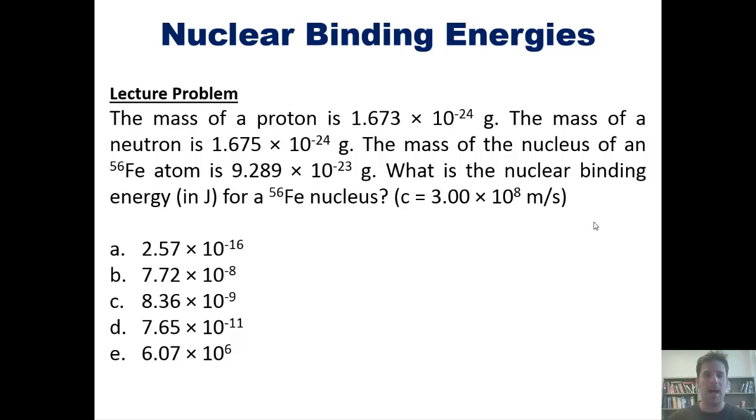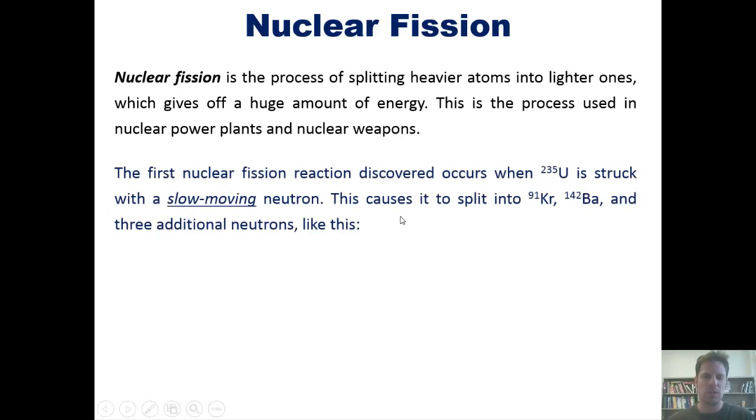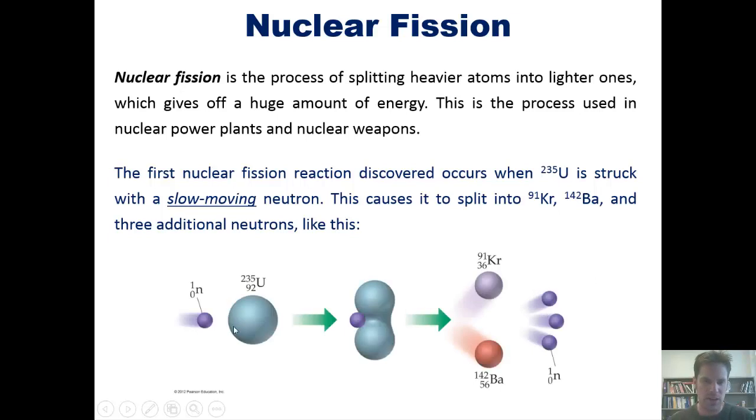Let's turn to another subject, that of nuclear fission. Nuclear fission is the process of splitting heavier atoms into lighter ones, which gives off a huge amount of energy. This is the process used in nuclear power plants and in nuclear weapons. The first nuclear fission reaction discovered occurs when uranium-235 is struck with a slow-moving neutron, as shown in this figure. This causes it to split apart into krypton-91, barium-142, and three additional neutrons, as shown here.